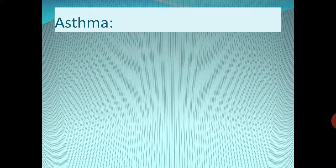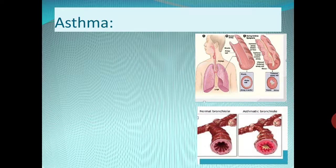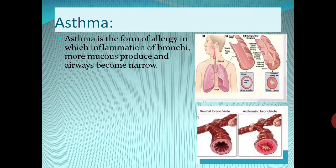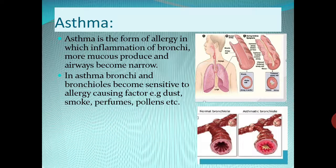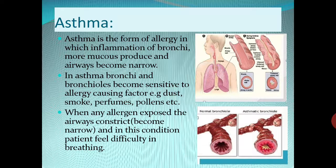The next disease is asthma. Asthma is a form of allergy in which there is inflammation of the bronchi, more mucus is produced, and the airways become narrow. In asthma, the bronchi and bronchioles become sensitive to allergy-causing factors — for example, smoke, perfumes, and pollens. When any allergen is encountered, the airways constrict and the patient feels difficulty in breathing.